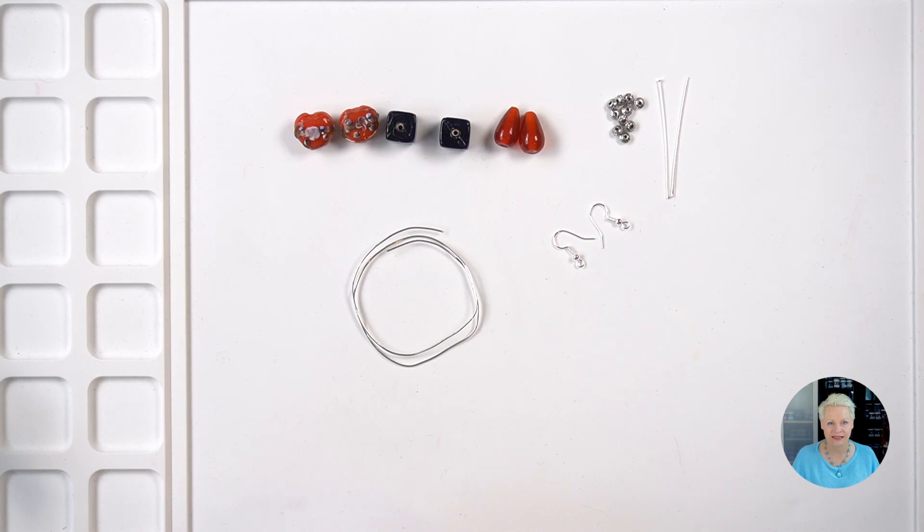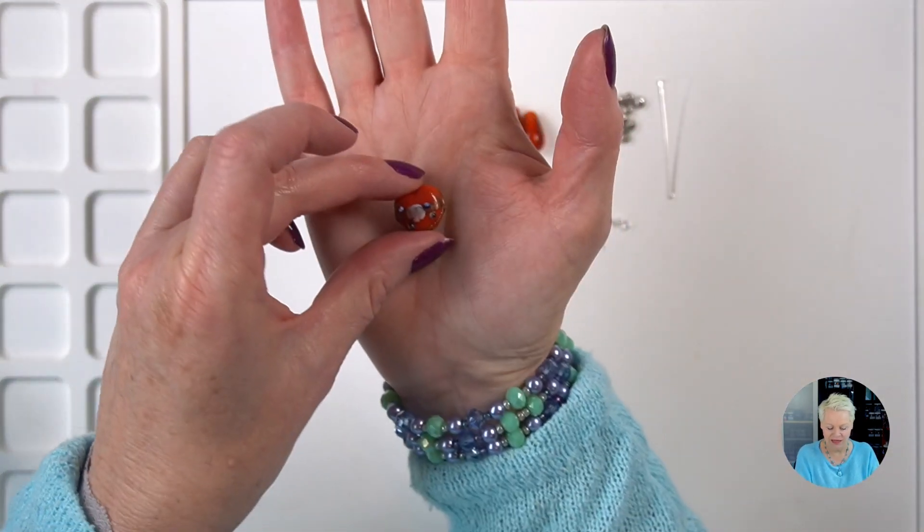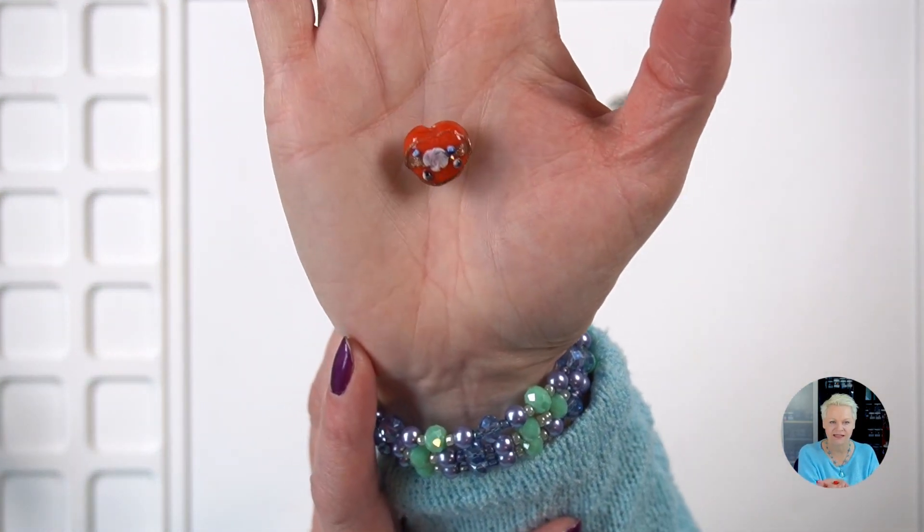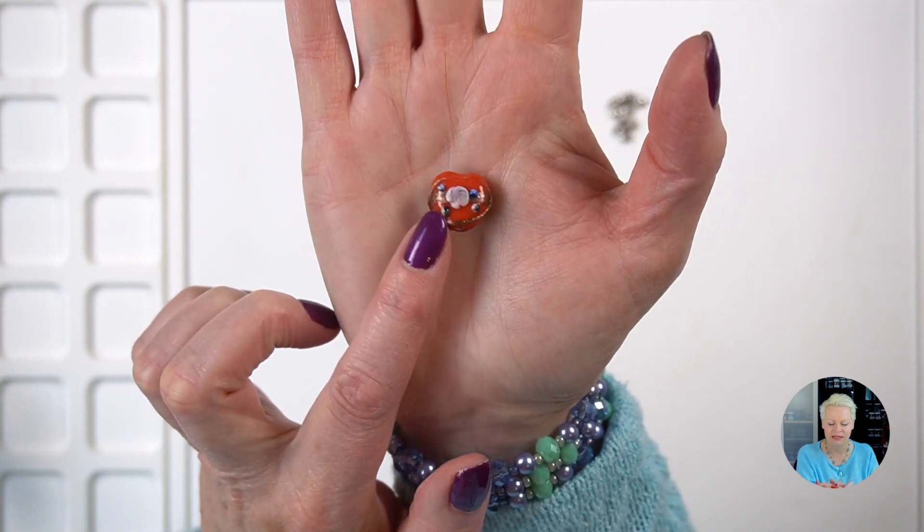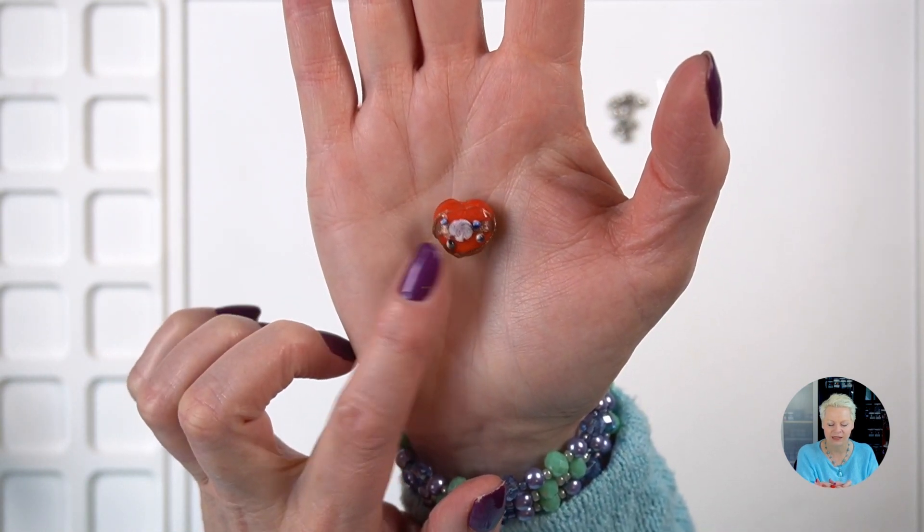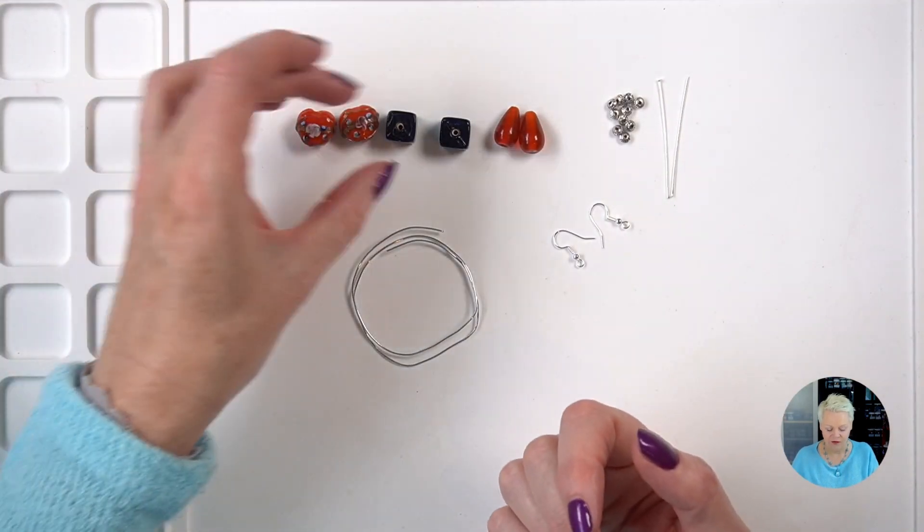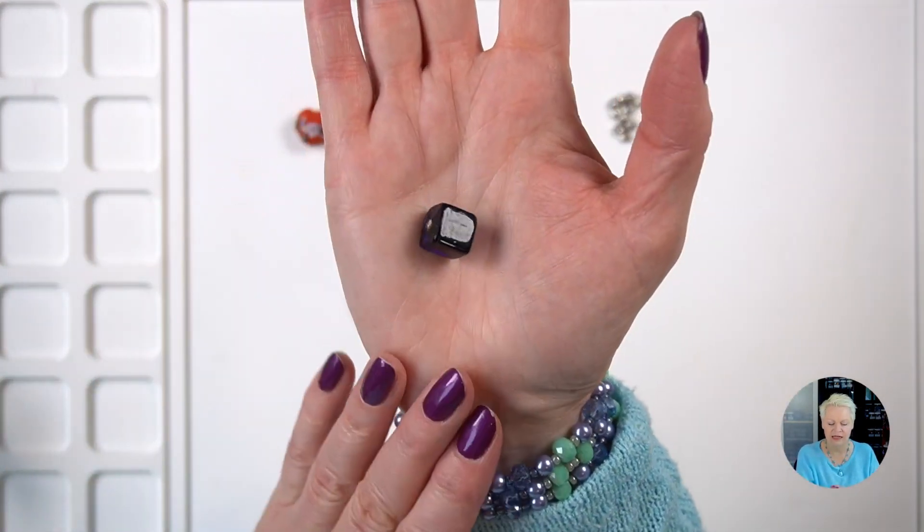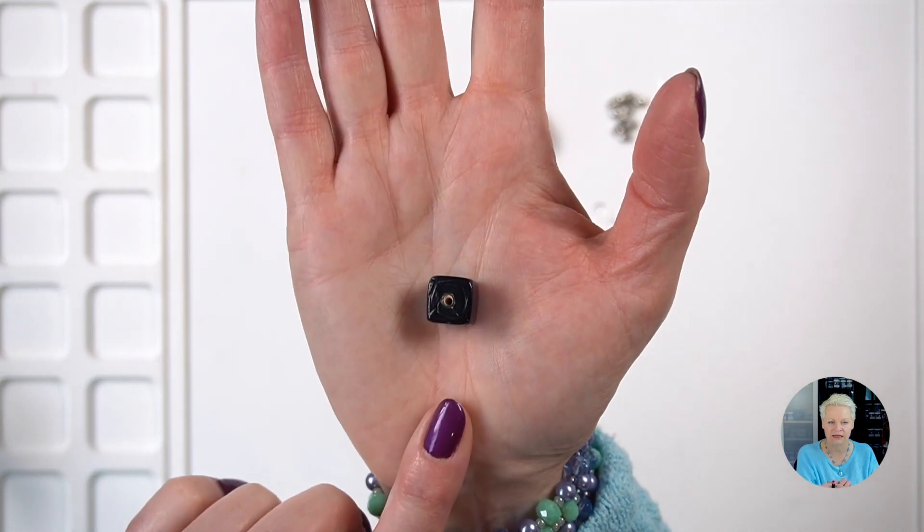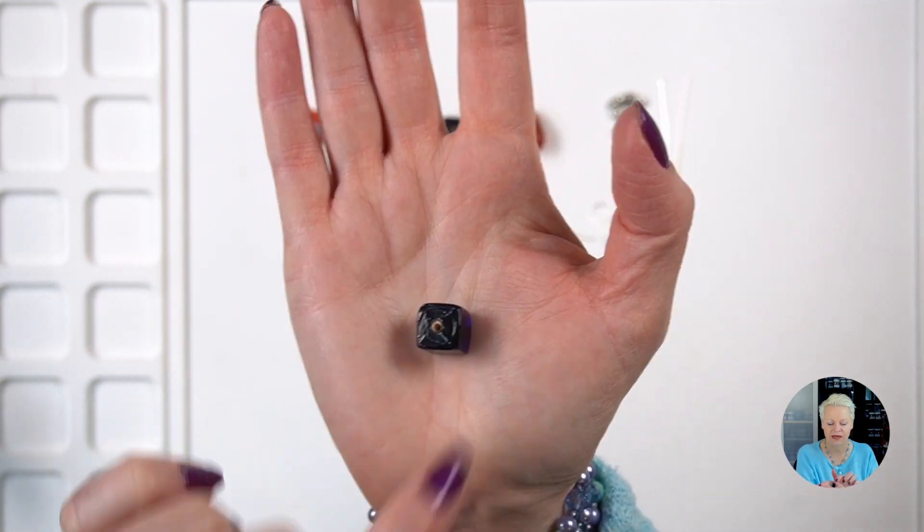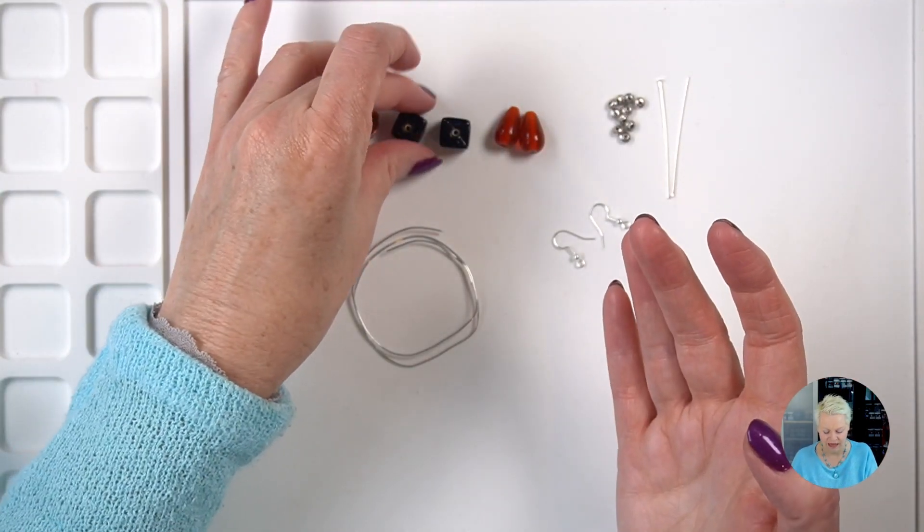So what I've got here is some beautiful Indian lampwork beads. I have these gorgeous hearts. Aren't they just stunning? They're 18 millimeters so they're quite large and they're in the color paprika. So I have two of those. I have two of these 10 millimeter Indian glass lampwork beads. They are a cube in navy blue.